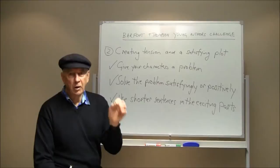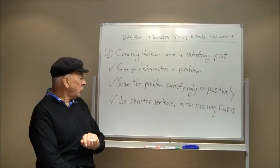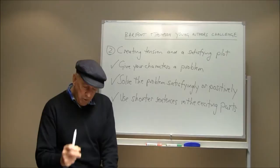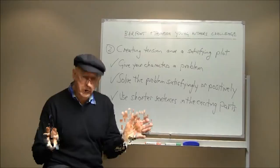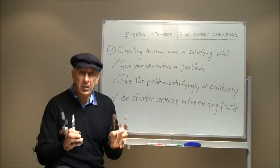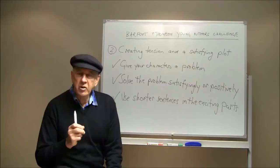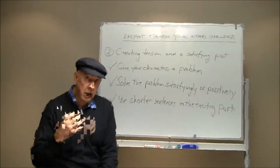Use shorter sentences in the exciting parts. Make sure your sentences, when you get to exciting bits, are short for dramatic effect. For example: 'The door burst open. Dad fell backwards. Mum couldn't stop laughing.' Three simple, crisp, short sentences. Shorter sentences are like a faster pulse — if you're excited, your heart beats faster. Your sentences should beat faster too.